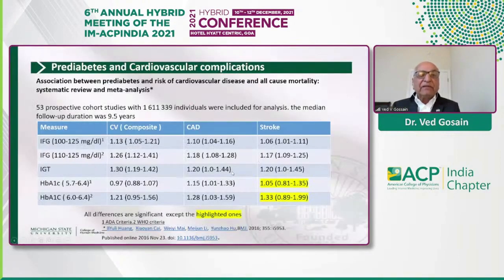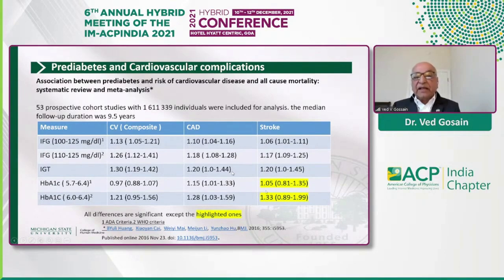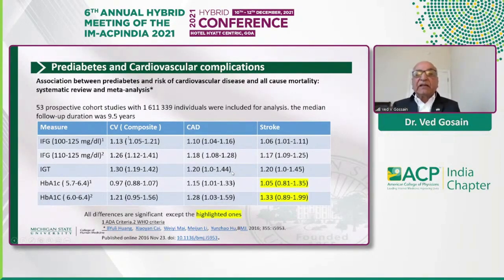This is a meta-analysis. If you look at impaired fasting glucose — whether defined by ADA criteria, WHO/IDF criteria, or hemoglobin A1C — cardiovascular disease death and coronary artery disease death are all significantly increased, except for the relationship of hemoglobin A1C and stroke. With large enough numbers and follow-up of approximately 10 years, there is a significant increase of cardiovascular complications and mortality.